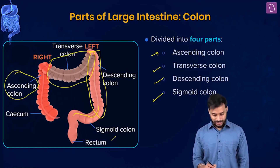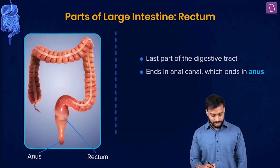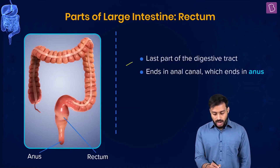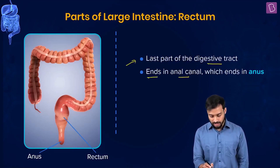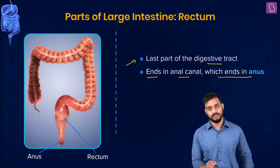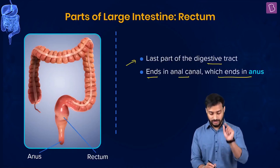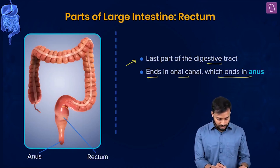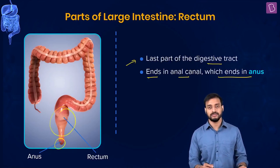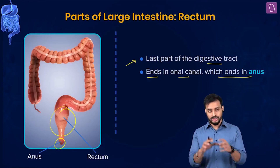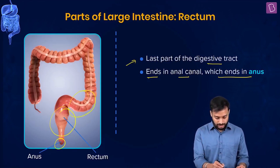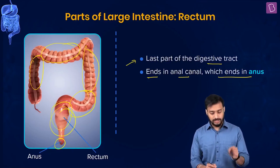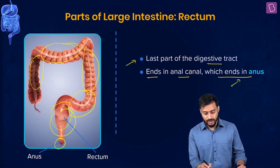The rectum is the last part of the digestive tract. It ends in the anal canal, which ends in the anus. So after the sigmoid colon, we have the descending part, then the sigmoid opens into the rectum, which ultimately ends at the anus.